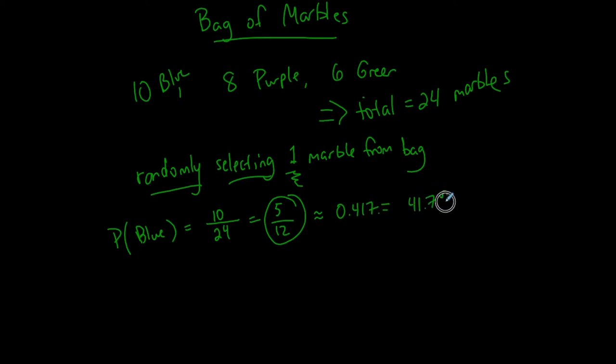Three to four digits to the right of the decimal place is typical for probability, which means that it's about 41.7% chance that I have a bag of 24 marbles with ten blue, eight purple, and six green. I randomly select one without looking. The probability that it's blue is 41.7%. I would say that's pretty high. I would say that that's probably likely to happen.